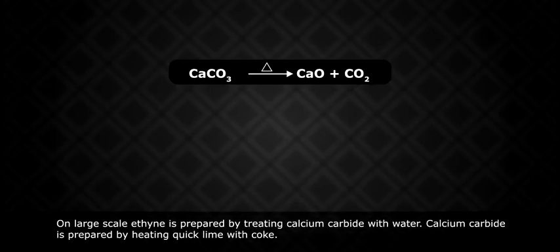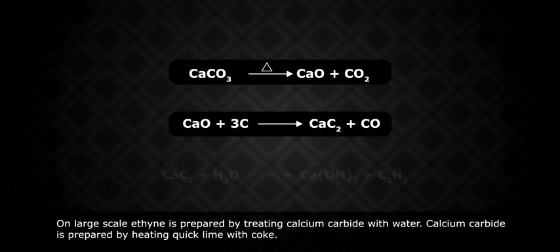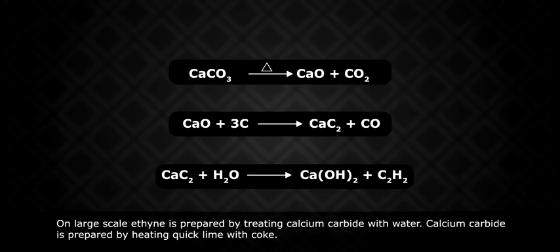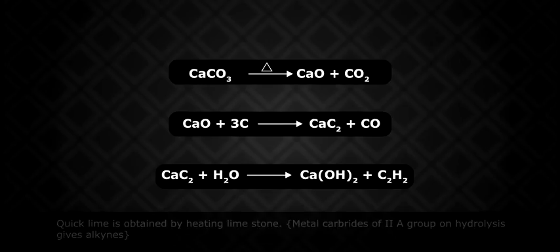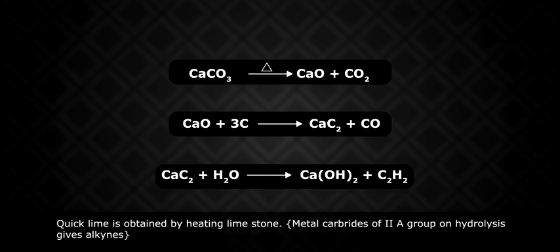A large-scale acetylene is prepared by treating calcium carbide with water. Calcium carbide is prepared by heating quicklime with coke. Quicklime is obtained by heating limestone.